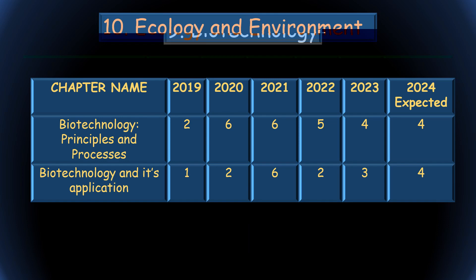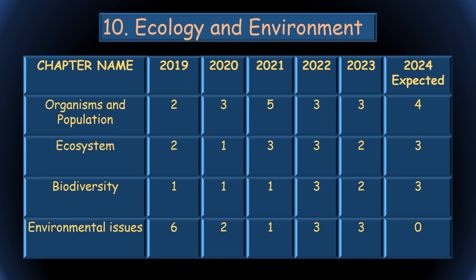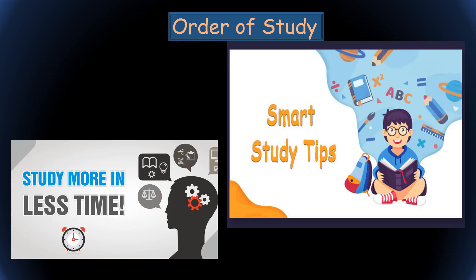The last unit — Ecology and Environment — had four chapters, but Environmental Issues has been deleted, so no questions will come from it. The remaining three chapters will get higher weightage. Total ten questions can come: four from Organisms and Population, three from Ecosystem, and three or four from Biodiversity and Conservation.